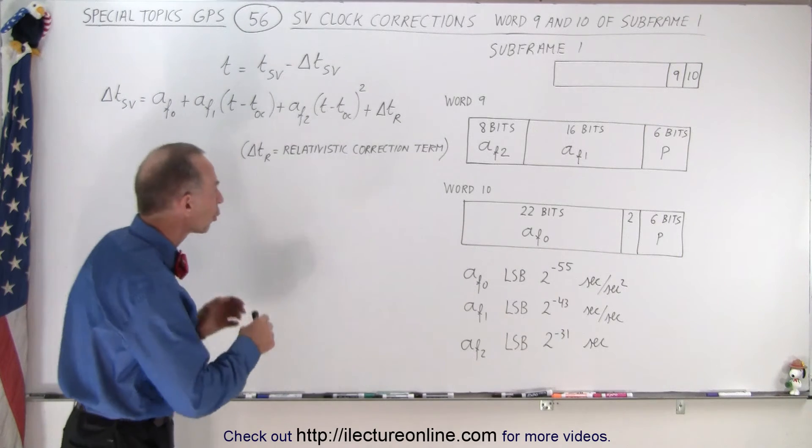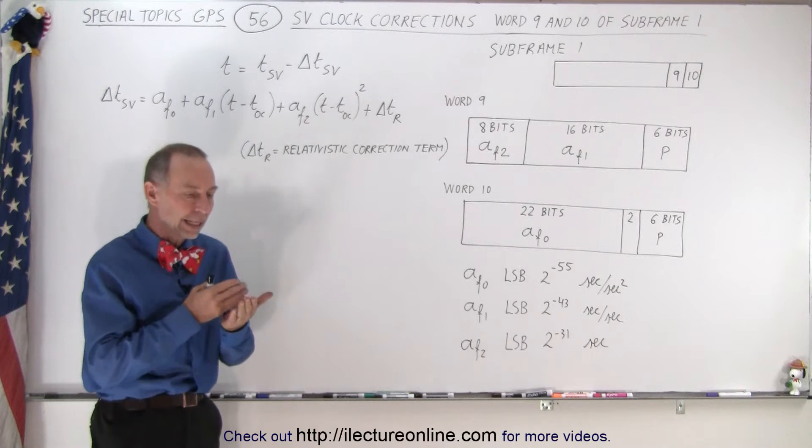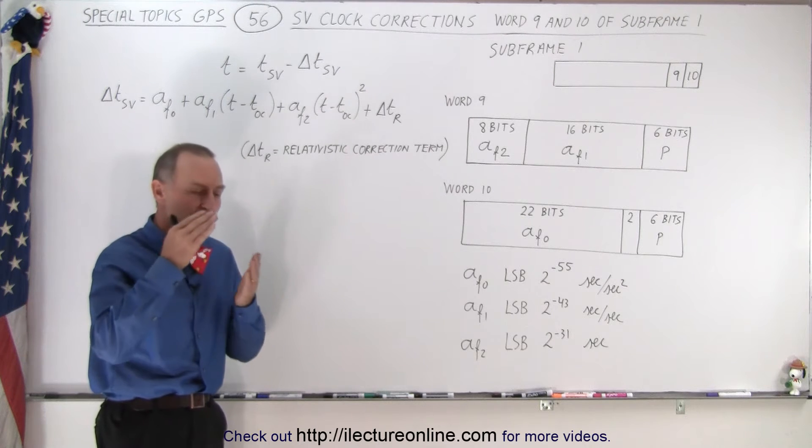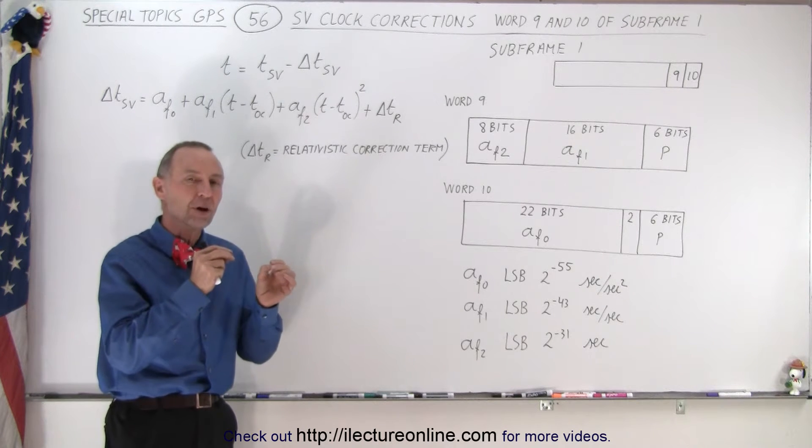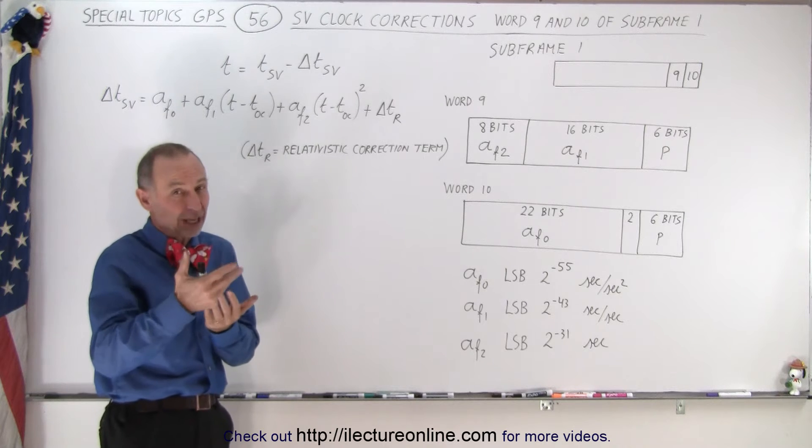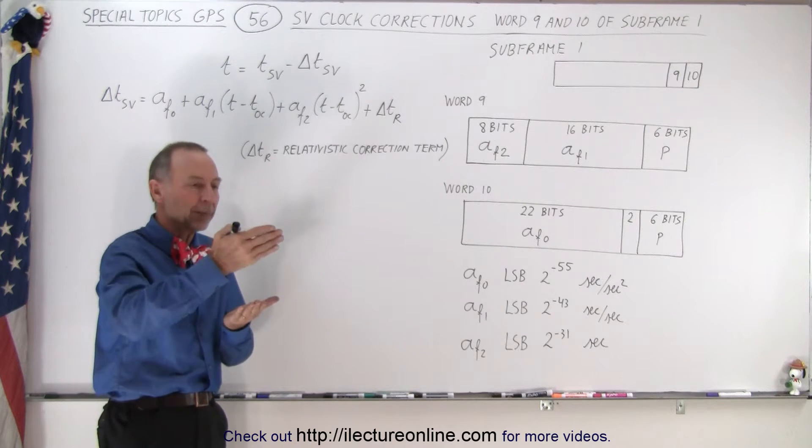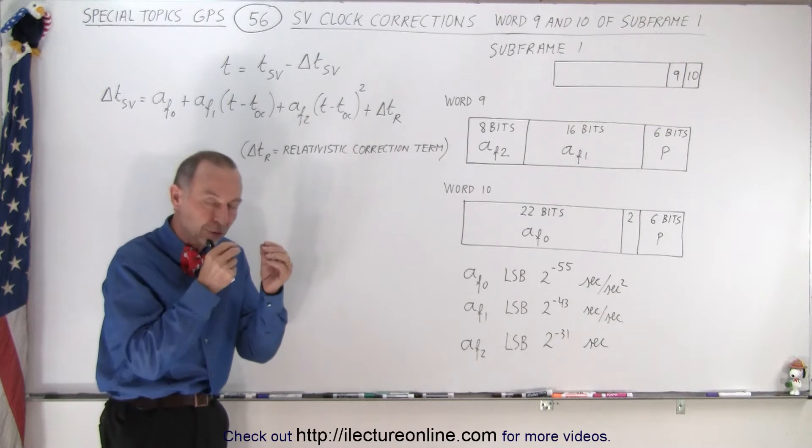They contain correction coefficients that we're going to need in order to calculate how far off the parameters of the ephemeris in each satellite will be from the true values depending upon how much time has elapsed from when those values were absolutely accurate.